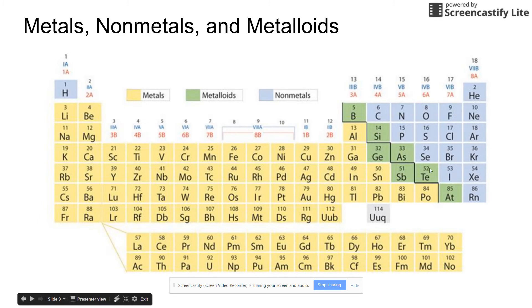This has all color-coordinated, so metals, metalloids here that are green, and then nonmetals, which are blue. On the left-hand side, you have your metals. On the right-hand side, you have your nonmetals, which are blue.